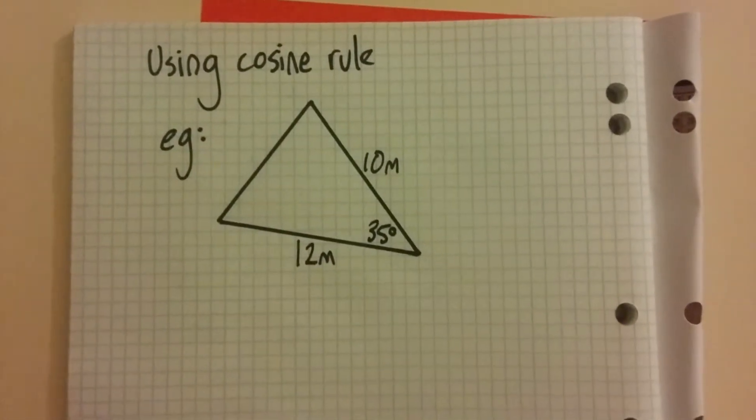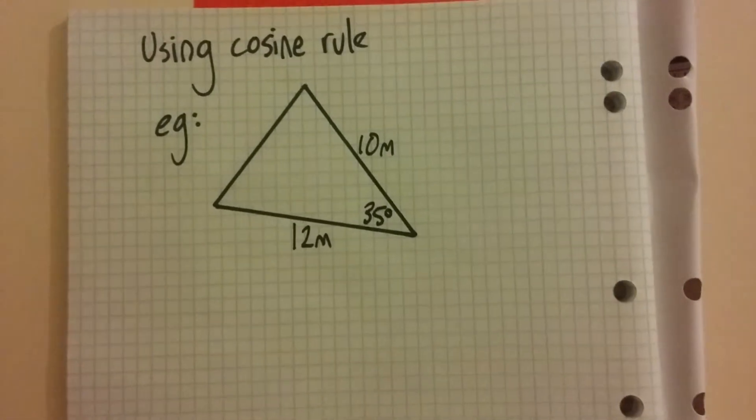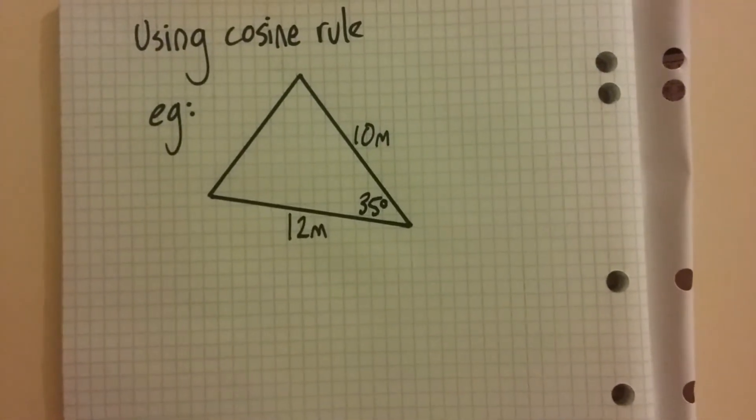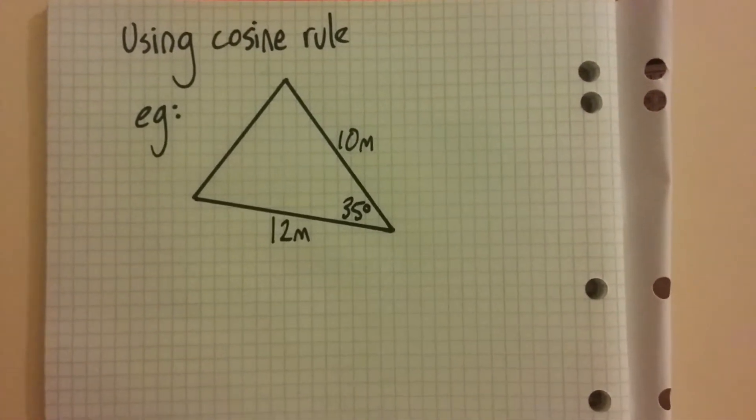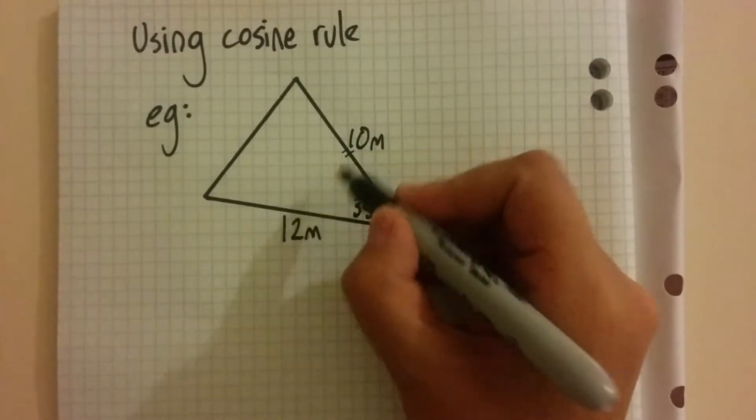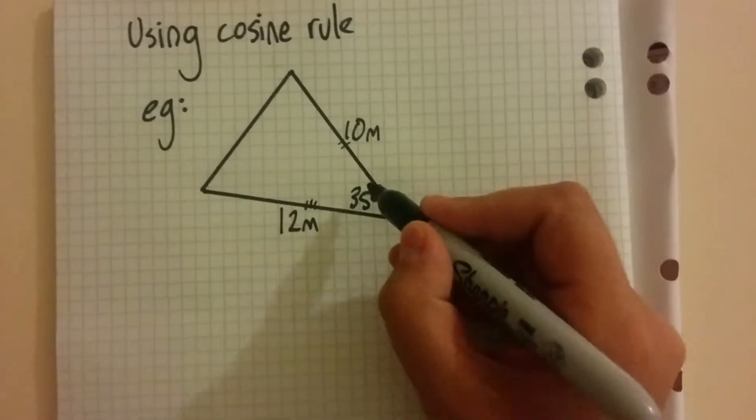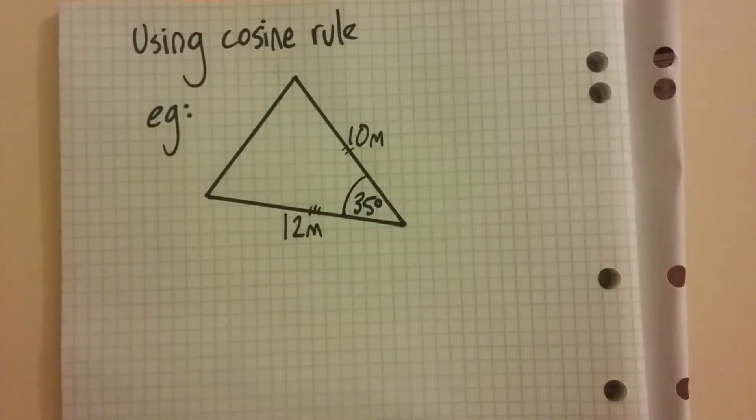Just a quick recap of using the cosine rule. We can use the cosine rule if we've got a triangle where we know two sides and the included angle.